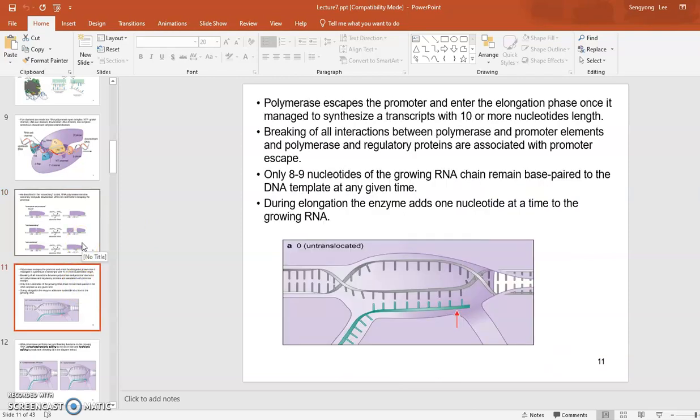Polymerase, RNA polymerase escapes the promoter and enters the elongation phase once it manages to synthesize about 10 or more nucleotides length. Once 10 or longer nucleotide RNA is made, it moves from the promoter sequence area. The breaking of all interactions between polymerase and promoter elements and polymerase and regulatory proteins are associated with the promoter escape.